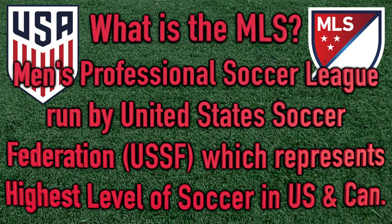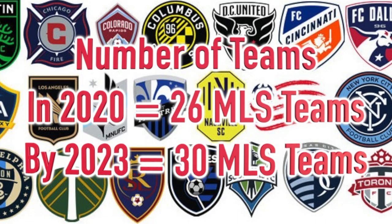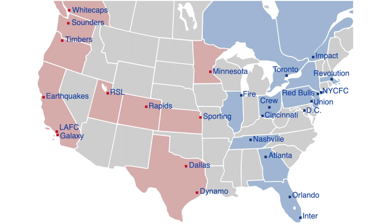It's a relatively young league — the MLS was founded in 1993 and the inaugural season took place in 1996. As of 2020, it's comprised of 26 teams, though that number will grow to 30 by 2023 as expansion franchises are already planned. This is a map of all the different clubs throughout the US and Canada — 12 teams in the Western Conference and 14 in the East, including three Canadian teams.